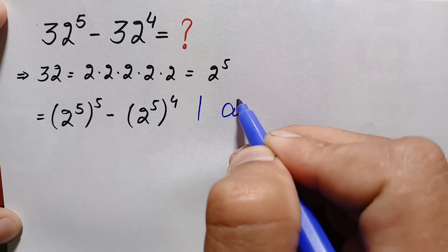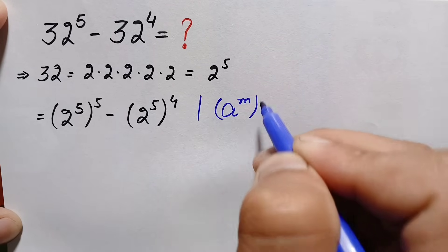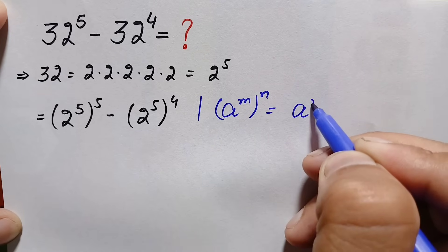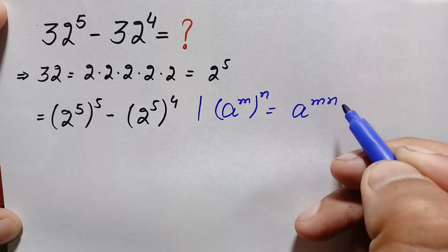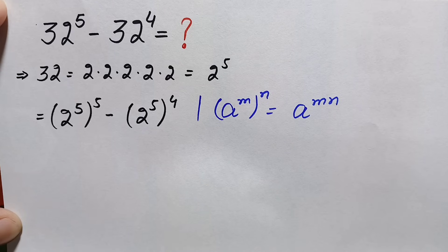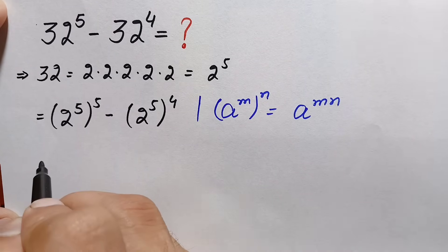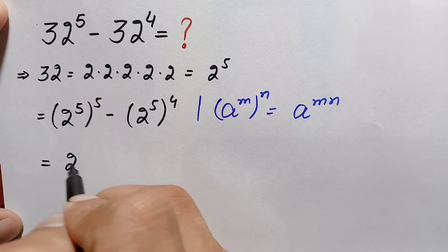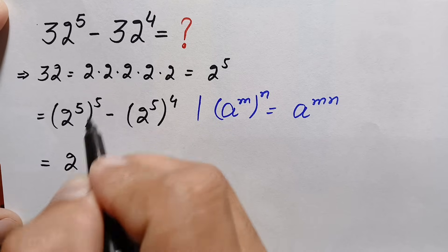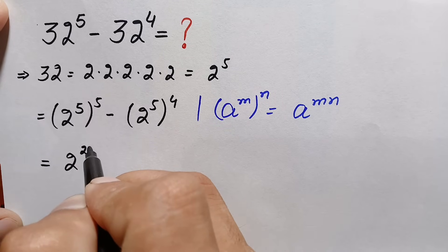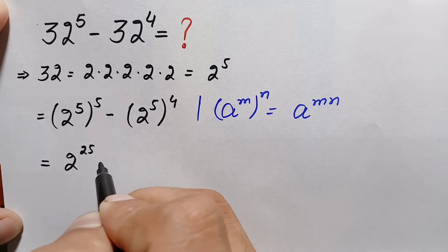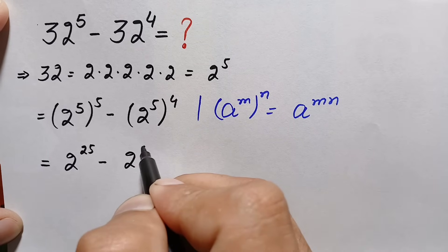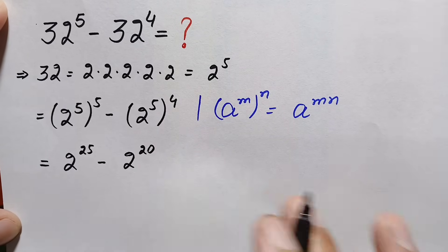The exponential identity is: a raised to power m, whole raised to power n, can also be written as a raised to power m times n. Using this identity, the first term becomes 2 raised to power 5 times 5, which is 2 raised to power 25, and the second term becomes 2 raised to power 5 times 4, which is 2 raised to power 20.